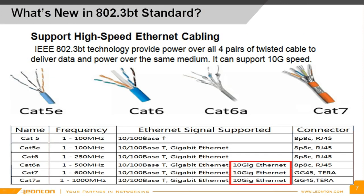The new standard also supports a data transfer rate of up to 10Gbps based on CAT5A or CAT7 cabling. Therefore, numerous power-hungry and high-speed devices, such as fifth generation small cellular radio units, can be powered up by this standard.